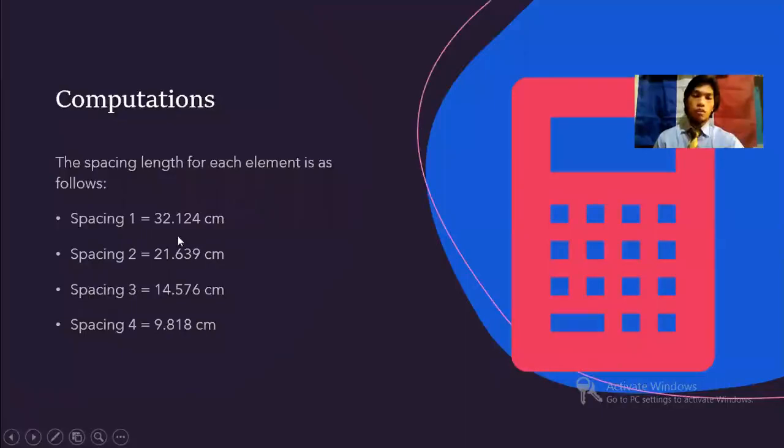These are the lengths of the spacing between the elements. So the lengths are 32.134 centimeters, 21.639 centimeters, 14.576 centimeters, 9.818 centimeters.